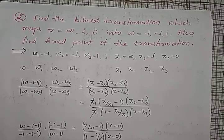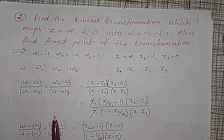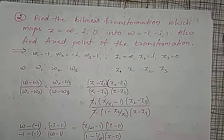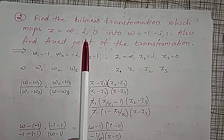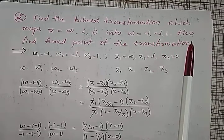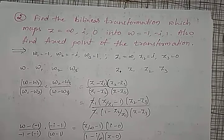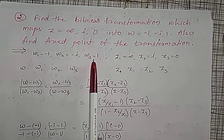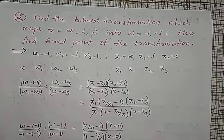Good morning friends. Today we will discuss examples on bilinear transformation where one of the points — either z or its image omega — may contain infinity, and how to solve such problems. Consider this problem: find a bilinear transformation which maps z = infinity, i, 0 into omega = minus 1, minus i, 1 respectively, and also find the fixed points of that transformation. Fixed points and invariant points are the same.